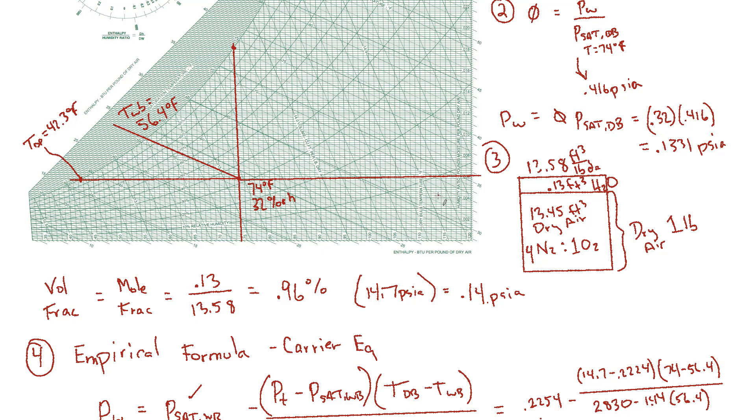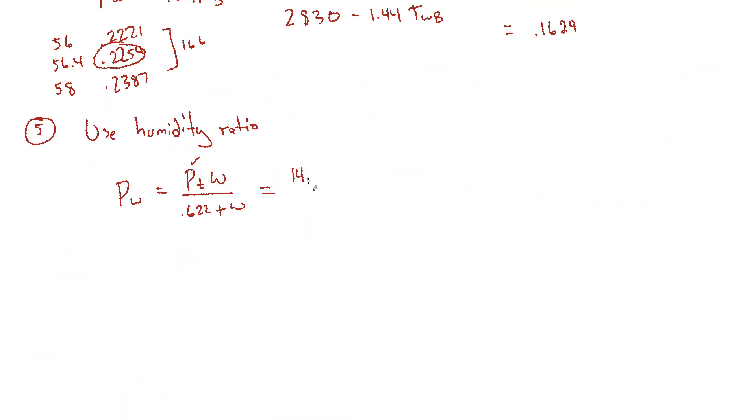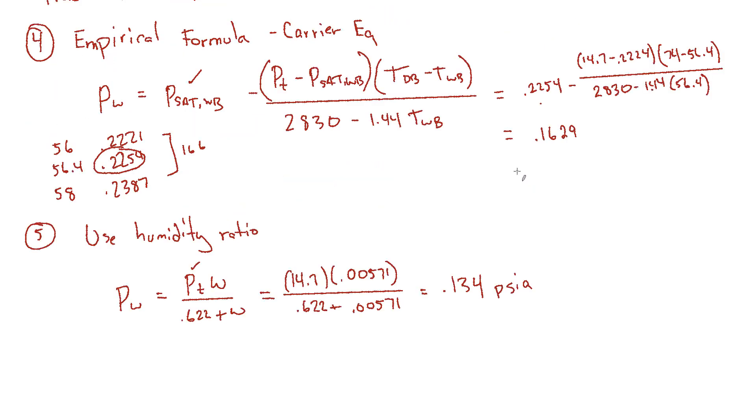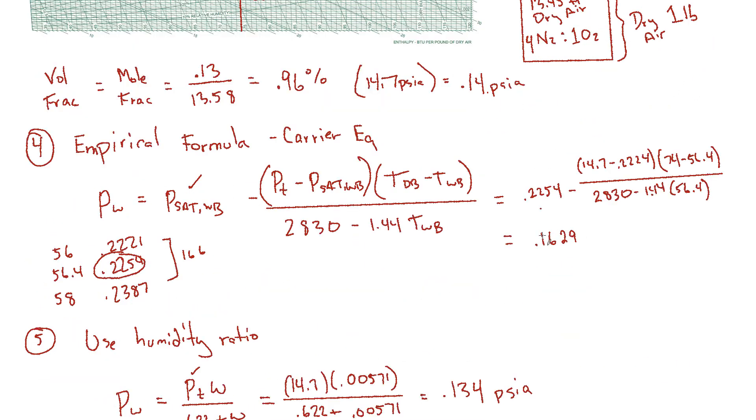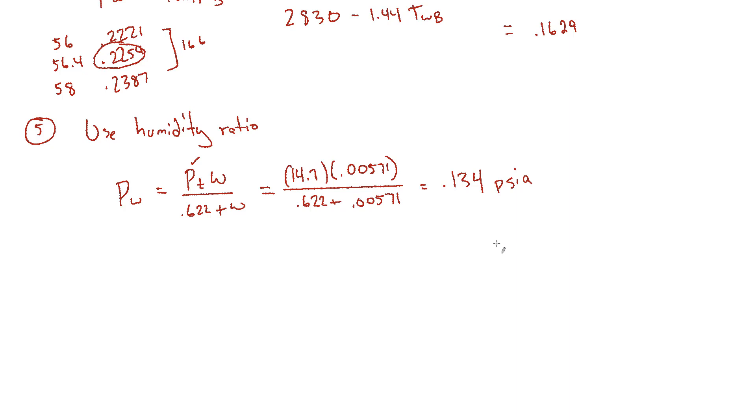I'm going to give you impossibly high precision here, 0.00571 pounds of water vapor per pound of dry air at that point. So 14.7 times 0.00571 over 0.622 plus 0.00571. And that works out to 0.134 PSIA. Very close to the answers that we got in the earlier method. So that is reassuring to see.